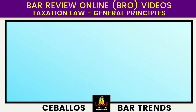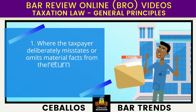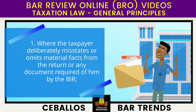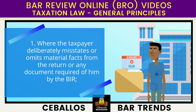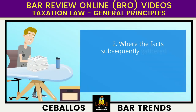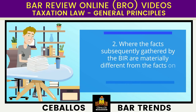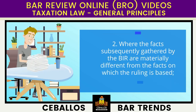Where the taxpayer deliberately misstates or omits material facts from the return or any document required of him by the BIR. Where the facts subsequently gathered by the BIR are materially different from the facts on which the ruling is based.